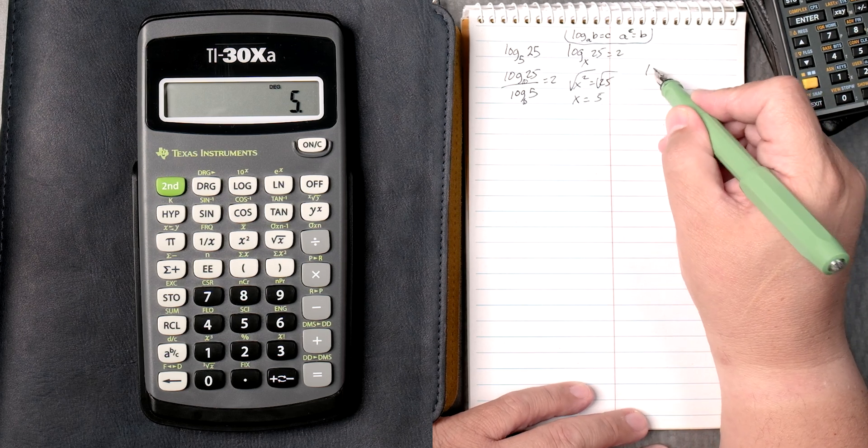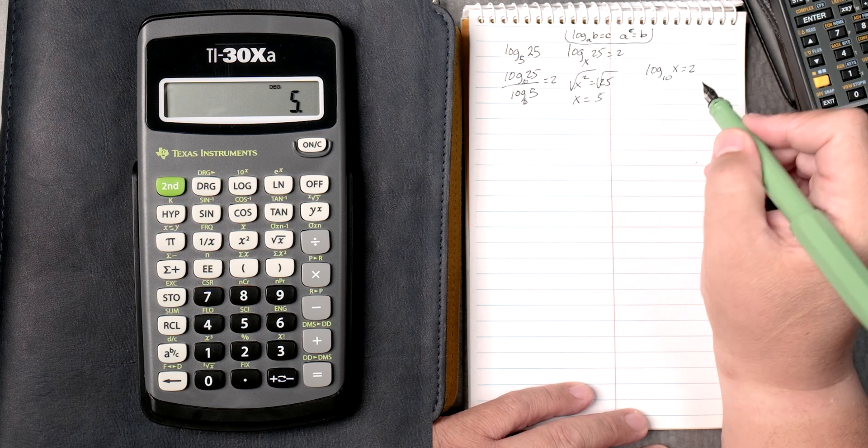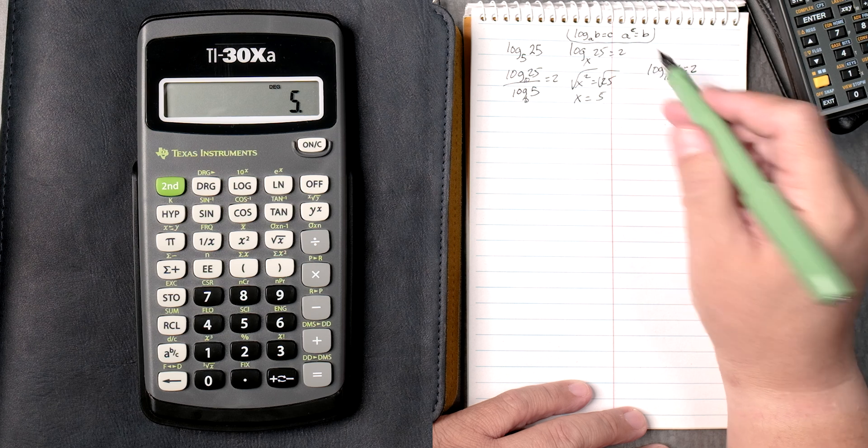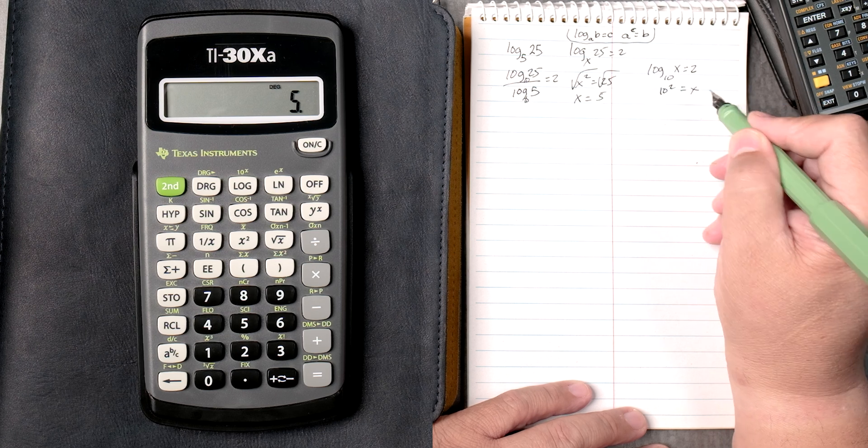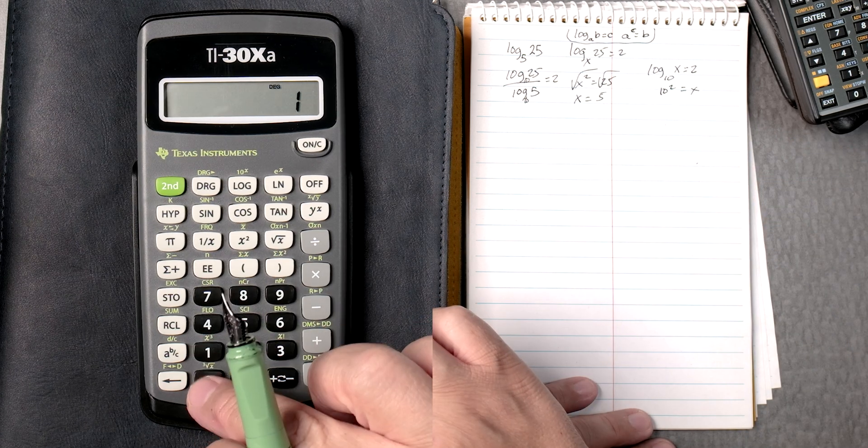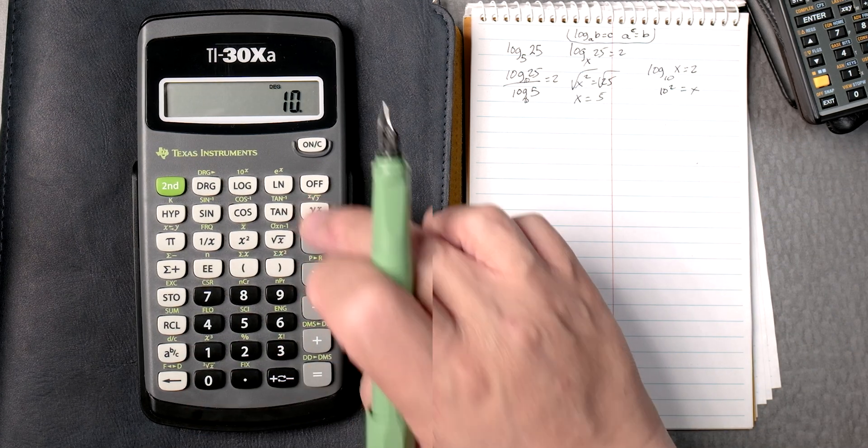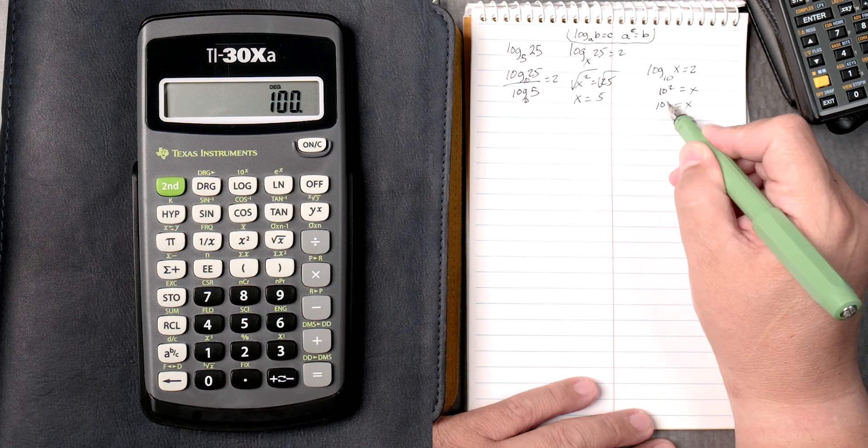Let's say we have the log of base 10, x equals 2. We use this rule, 10 squared equals x. 10 squared, so 10, y to the x, 2 equals 100, nice.